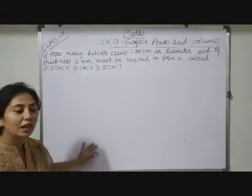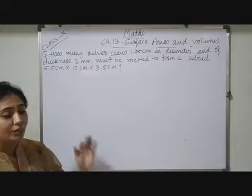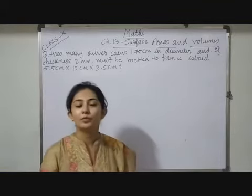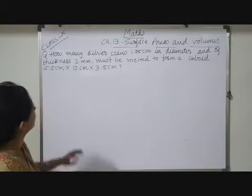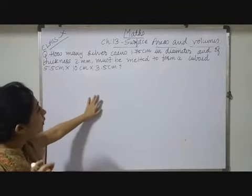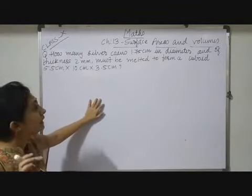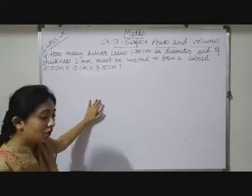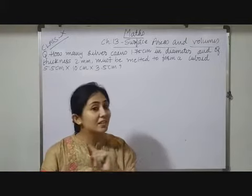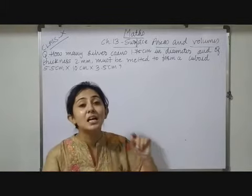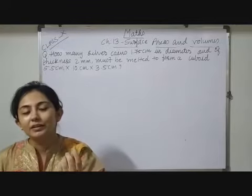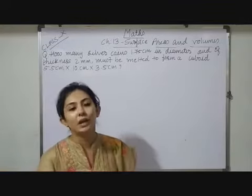So how many first? In your mind will be a question that we have to divide what. From a bigger quantity we have to divide a smaller one. So see, how many silver coins 1.75 centimeter in diameter. Now see, a coin having a shape, obviously it is not a circle, it is cylindrical, although it is having a negligible height, but that also we have to understand.